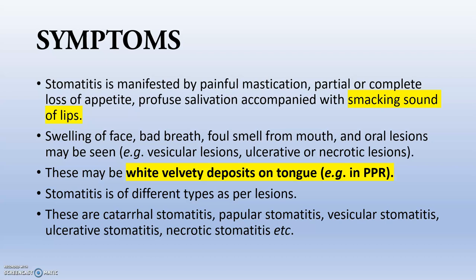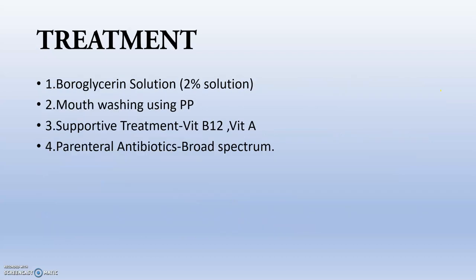There are different types of stomatitis: catarrhal stomatitis, papular stomatitis, vesicular stomatitis, ulcerative stomatitis, and necrotic stomatitis. You can define each type based on its name — necrotic means there is necrosis of the tissue, vesicular means there are vesicles present, papular means there are papules, and ulcerative stomatitis means there is ulceration.